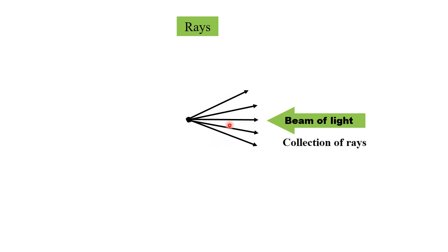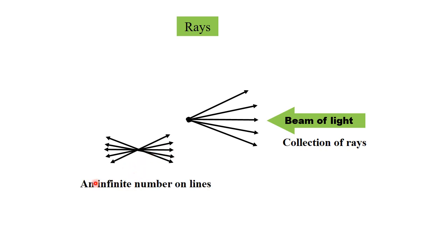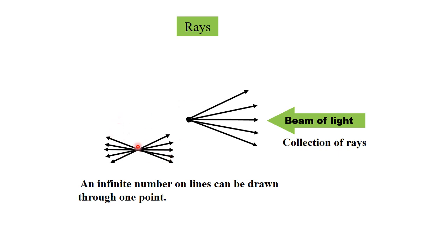This collection of rays is called a beam of light. Also, an infinite number of lines can be drawn through one point. If we consider a point and try to draw some lines from it, we see that we can draw an infinite number of lines using that one point.